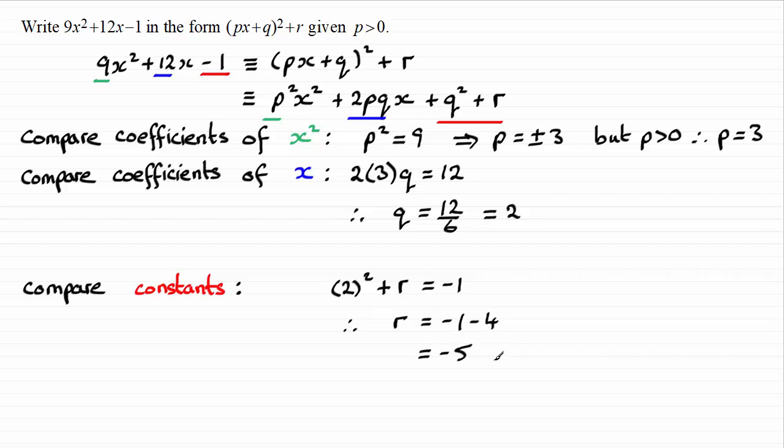So we now have p, q, and r. And so we can substitute them back into the expression here on the right. And we can finally conclude then that 9x squared plus 12x minus 1 is identical to 3x plus 2 all squared minus the 5. So I hope that's given you an idea how we can use this method then of comparing coefficients and constants to figure out our values for p, q, and r.